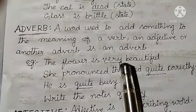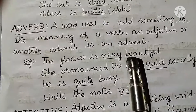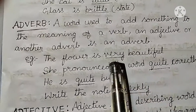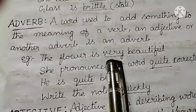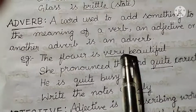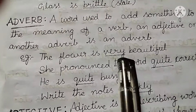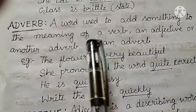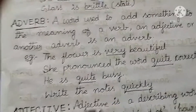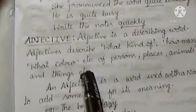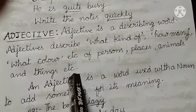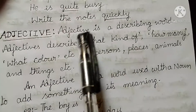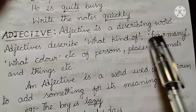'Quickly write the notes' — quickly ends in -ly. 'The flower is very beautiful' — here, 'very' is an adverb acting upon the adjective. How is the flower? Beautiful.